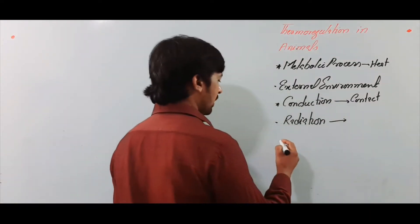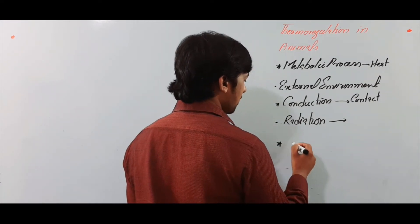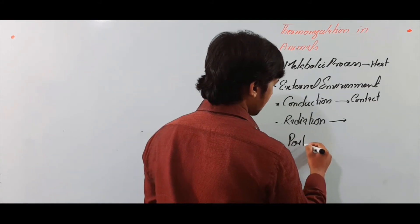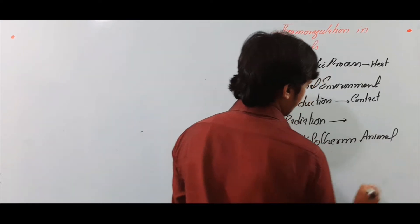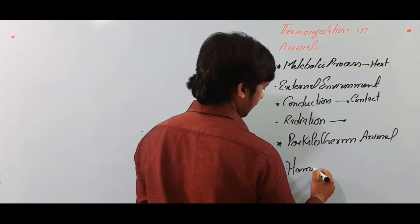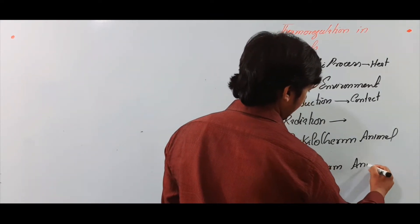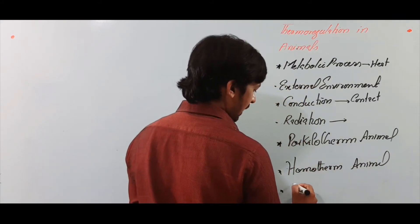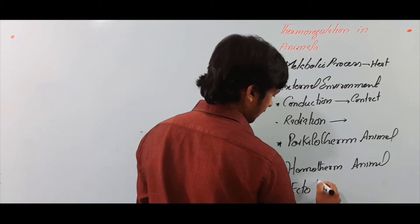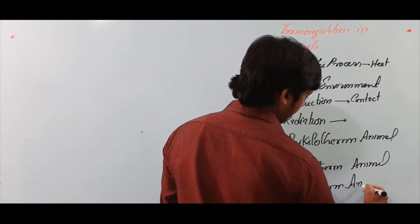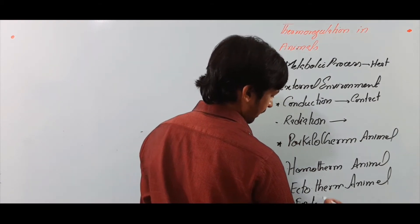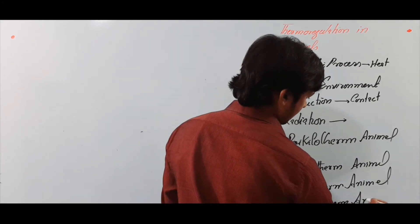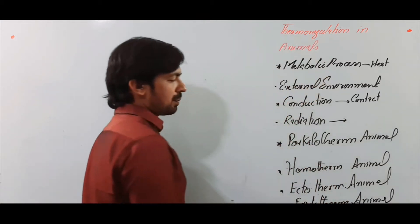Ab regulation of temperature ki buniyad par humne organisms ko classified kiya hai. Kuch aise hote hain jinhe hum kehte hain poikilotherm animals. Kuch aise hote hain jinhe hum kehte hain homotherm animals. Kuch aise hote hain jinhe hum kehte hain ectotherm animals. Aur kuch aise hote hain jinhe hum kehte hain endotherm. Yeh sari terms bahut important hain, so let's discuss one by one.